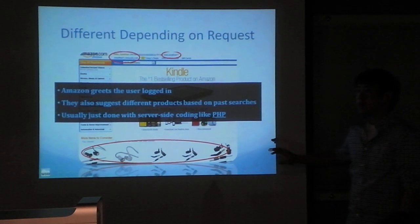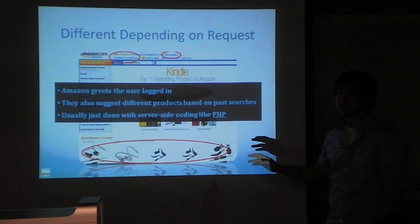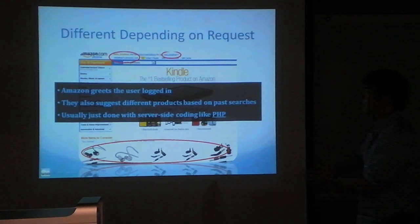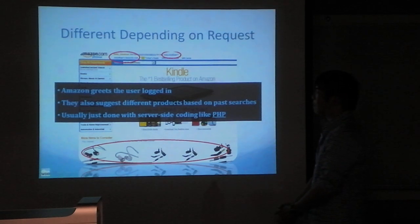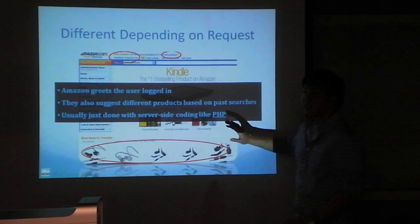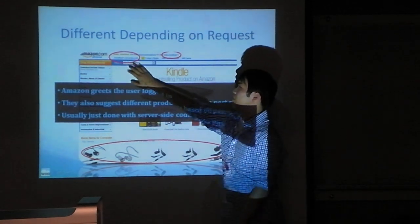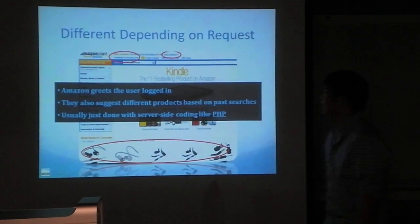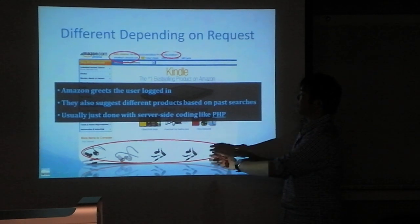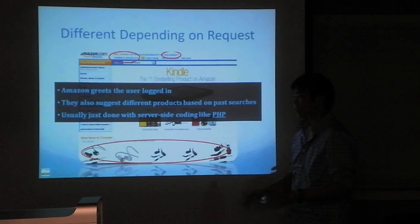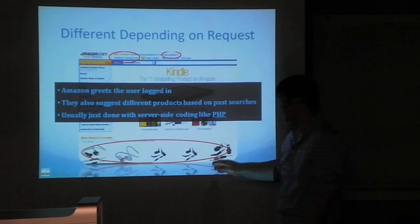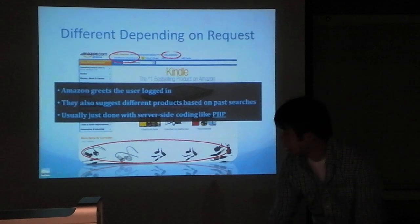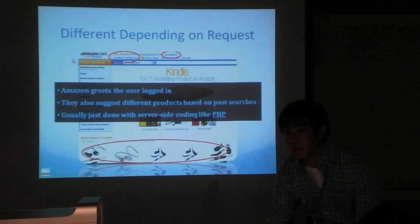Here's an example of dynamic pages that differ depending on the request. I went to Amazon.com while logged in, and Amazon does a lot of things to make the page unique for me — for example, it says 'Hello, Jonathan.' Right here, Amazon tracks your searches to suggest items you might like. I was looking for headphones earlier, and it suggested a bunch of headphones for me to buy. That is an example of dynamic pages.